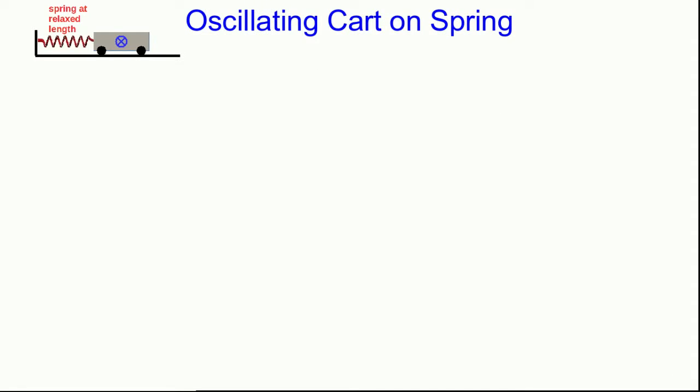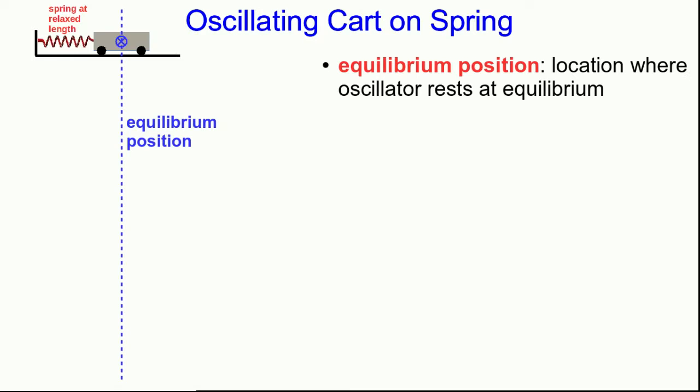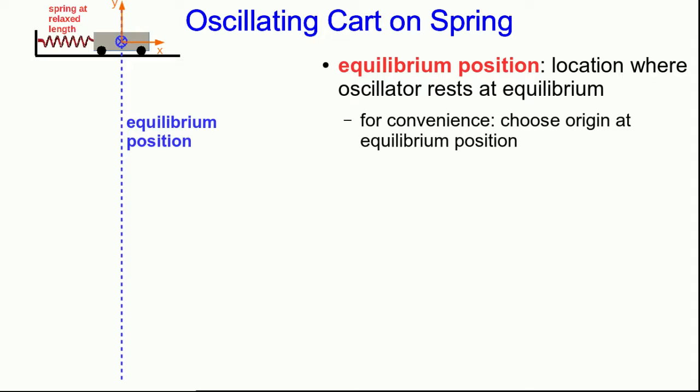The simplest mass-on-spring system we can think about is a cart on a spring, or perhaps an air puck on a spring — some object attached to a spring which can move with negligible friction. When the spring is at its relaxed length, the vector sum of forces on the object is zero, so we can use the term that we've seen before: this object is at static equilibrium. We call this position the equilibrium position, and throughout this unit it's going to be convenient to choose the origin of our coordinate system at the equilibrium position.